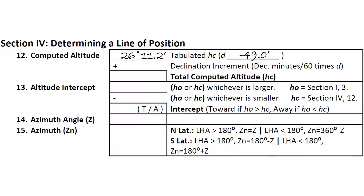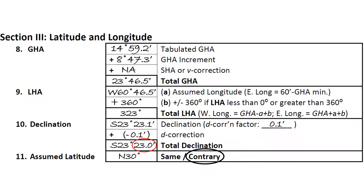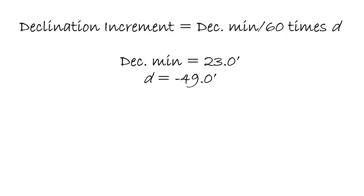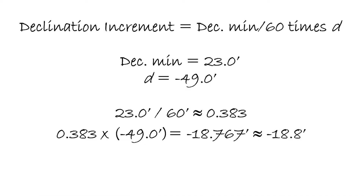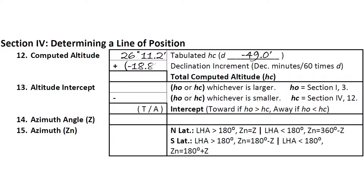Now we need to calculate our declination increment, which accounts for the declination minutes we ignored earlier. We will take the minutes and divide them by 60 arc minutes, then multiply that number by the D value we just obtained to calculate our declination increment. In our example, our declination minutes were 23 arc minutes. With a D value of negative 49 arc minutes, we do the math: dividing our declination minutes by 60 gives us 0.383, rounded to the nearest three decimals. Multiplying this value by our D, we get negative 18.8 arc minutes. We note this on the sight reduction form.